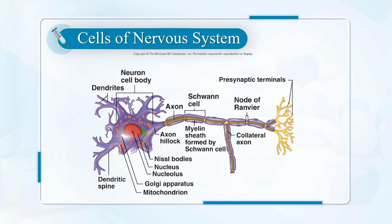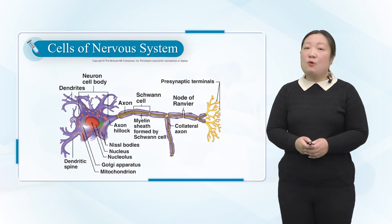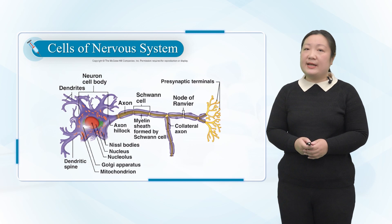The part where nerve fibers are gathered in the brain and spinal cord is bright and white, called white matter. Now we'll give the lessons on basic functions of neurons.